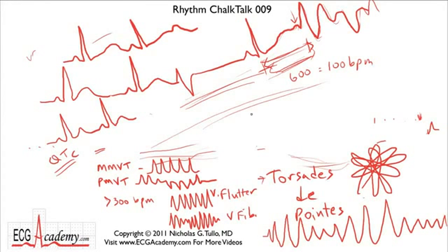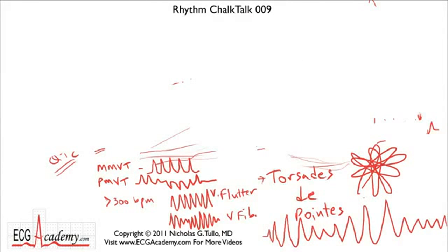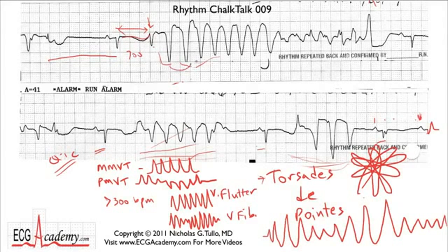For more on the mechanism, look into early afterdepolarizations — transmembrane potential studies show these cause the beats in torsades. I'll cover that on my website under mechanisms of arrhythmias. Bringing the tracing back, you can confirm: following the pause there's a very long bizarre T wave with a QT of 700 milliseconds, the first beat of the tachycardia has a very long coupling interval, the beats are initially large then get smaller and then smaller again before getting bigger — classic polymorphic VT, classic torsades, just not the textbook picture.